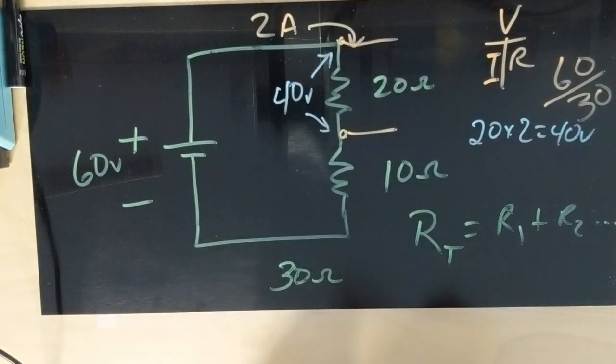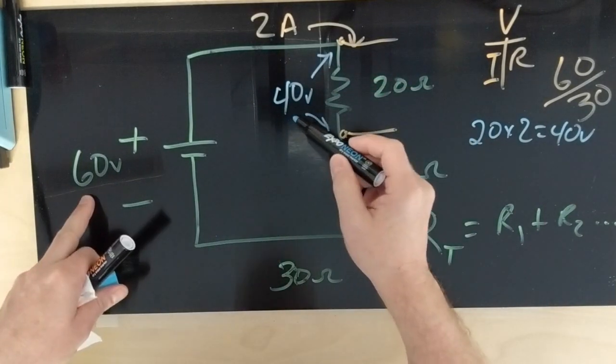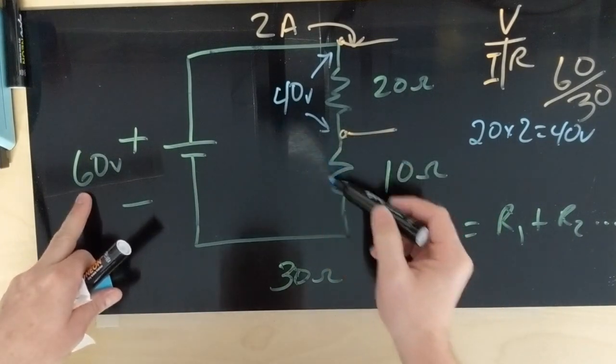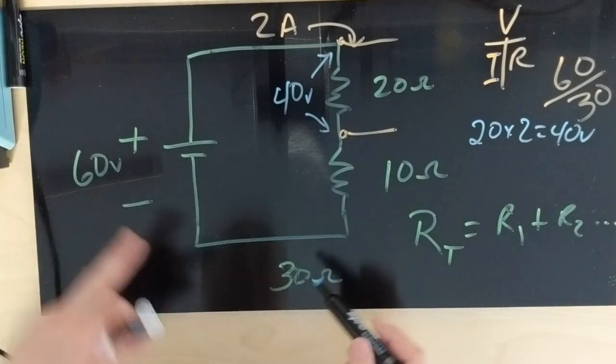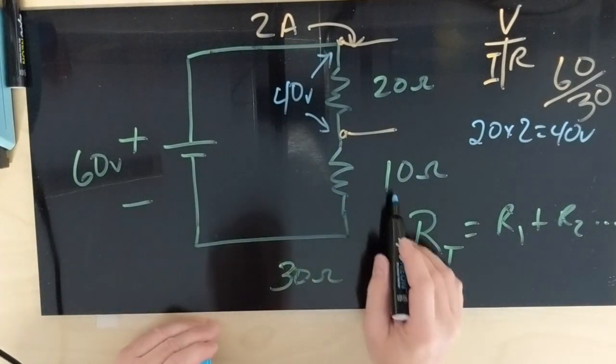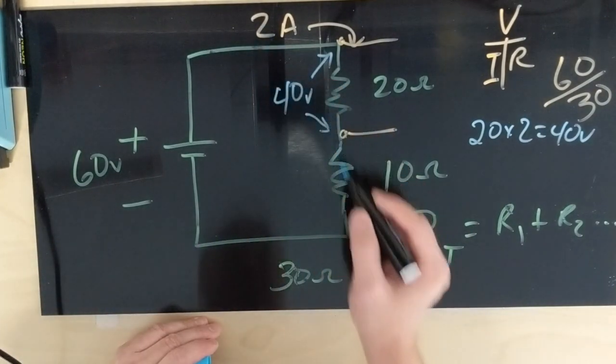We could easily subtract since we only have one left. It should be 20, right, to equal 60 if we're going to drop all across. But what we can do is go 10 times 2, which is also 20.